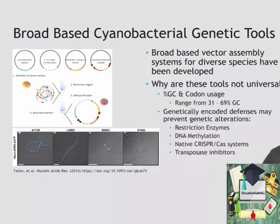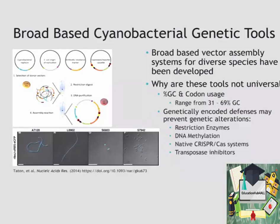Something we have to think about is why these tools aren't universal. For example, a reason they may not be universal is that the GC content of the genomes are quite different, and thus the codon usage of these genomes are quite different. Cyanobacterial genomes can range from 31 up to 69% GC, which is a very large range for encoding proteins. As well, there are often genetically encoded defenses against exogenous DNA — things the cell would otherwise think are viruses. Restriction enzymes, DNA methylation, native CRISPR-Cas systems, and transposase inhibitors can all become deleterious to our efforts to transform and manipulate cyanobacteria.